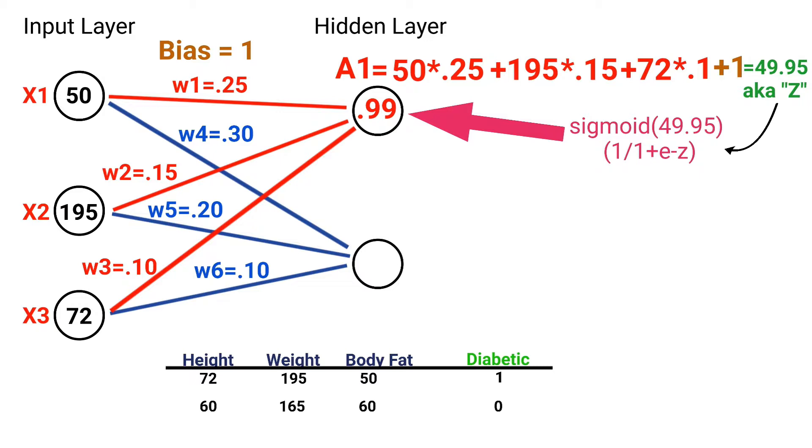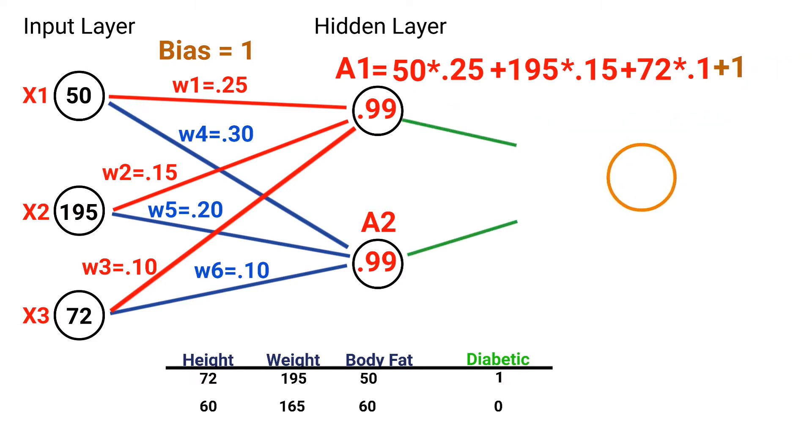Now, the next step would be to calculate the activation value for the second neuron in our hidden layer, using the weights in blue this time. Now, for the sake of time, I'm going to go ahead and calculate this for us. And this also gives us another value of 0.99. Now, the next thing we want to do is let's go ahead and draw the node in our output layer. We'll call this value A3, and we'll give it a bias of 1 and populate random weights.